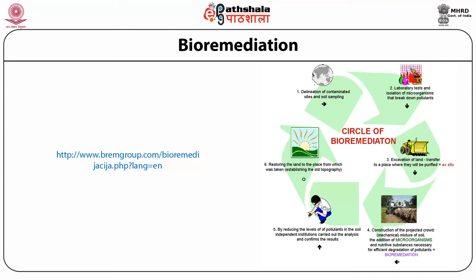The next step includes construction of the projected area, mechanical mixture of the soil, the addition of microorganisms and nutritive substances necessary for efficient degradation of pollutants. After bioremediation, by reducing the level of pollutants in the soil, independent institutions carry out analysis and confirm the result. Then the land is restored to its original place, re-establishing the old topography. So the whole circle goes from identification to re-establishment of natural conditions by the bioremediation process.